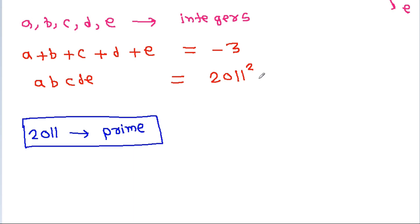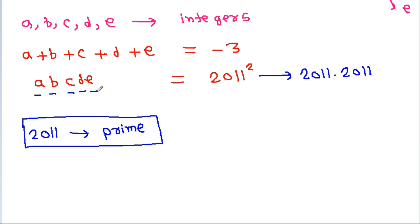So, 2011² will be 2011 times 2011, and we have 5 integers a, b, c, d, and e. So, any one will be 2011, the second one will be 2011, the third one will be 1, the fourth one will be 1, and the fifth one will be 1.